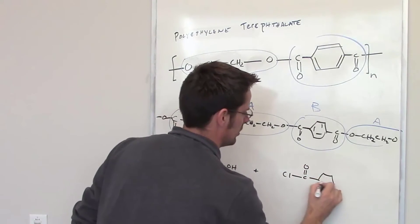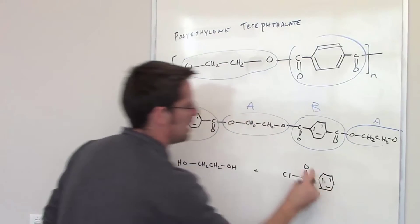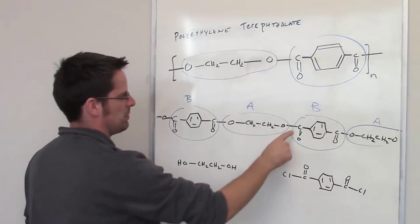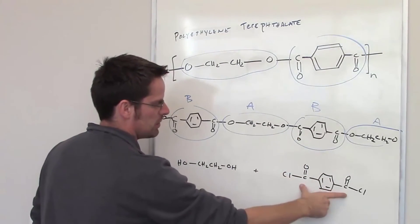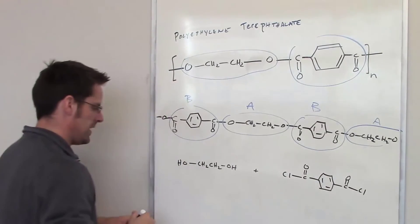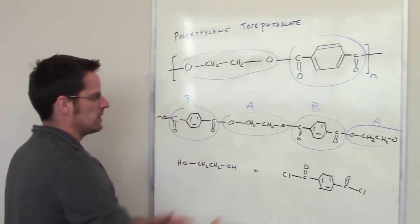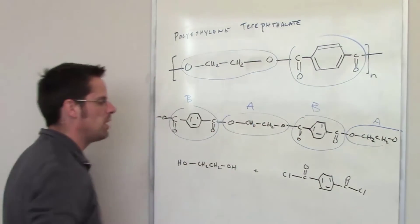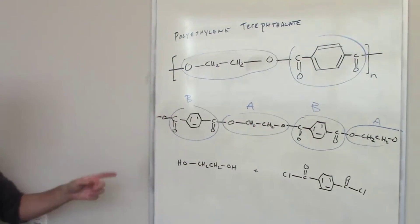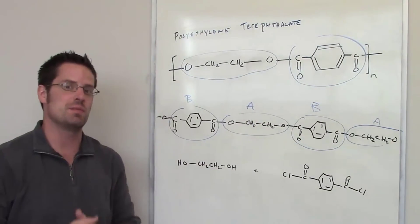The diacid chloride is going to look like building block B, except I've placed chlorines on the ends of these carbons that are double bonded oxygens. So if I took this molecule and this molecule and reacted them together, they would polymerize to form polyethylene terephthalate. Those are the two monomers that I would use to make this polymer.